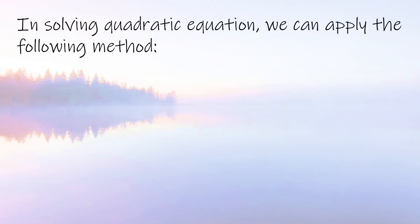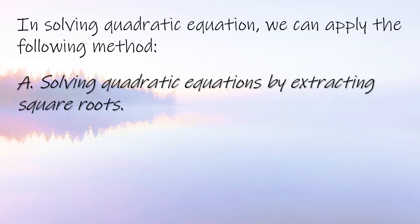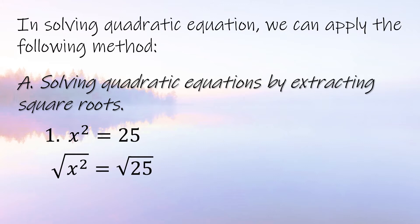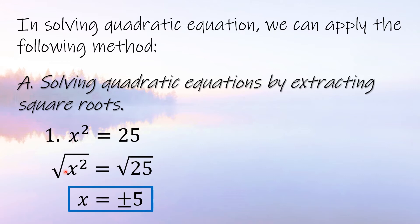In solving quadratic equations, we can apply the following method. First is solving by extracting square roots. Example: x² = 25. We get the square root of x² and the square root of 25. The square root of x² is x, and the square root of 25 is positive or negative 5. Therefore, x = 5 and x = −5.